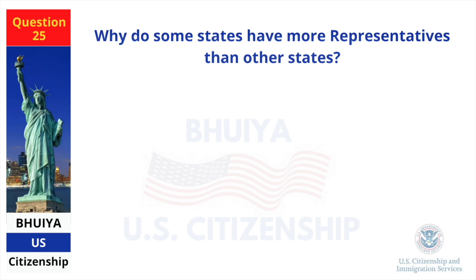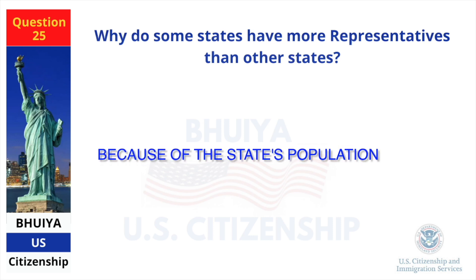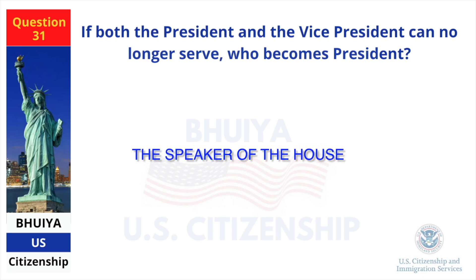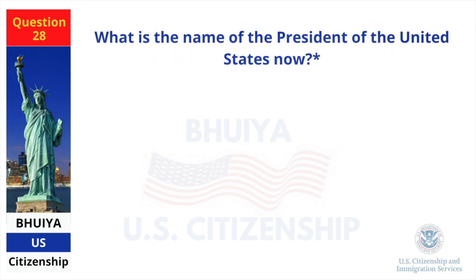We elect a president for how many years? Four. Why do some states have more representatives than other states? Because of the state's population. If both the president and the vice president can no longer serve, who becomes president? The Speaker of the House.